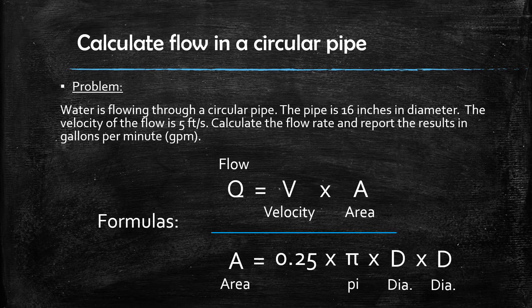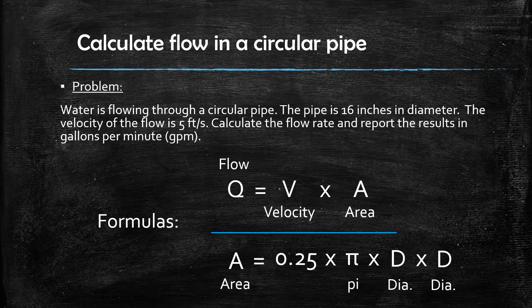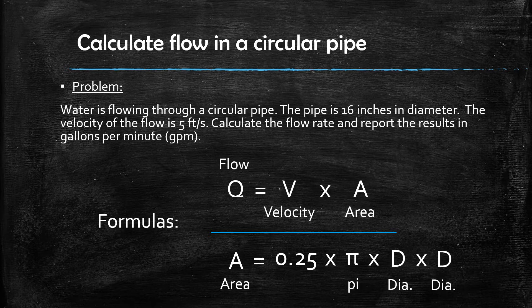You will also need the formula for the area of the shape of the pipe. Here we have the formula for the area of a circle, which is 0.25 multiplied by pi, which is approximately 3.14, multiplied by the diameter of the pipe, and multiplied a second time by the diameter of the pipe.